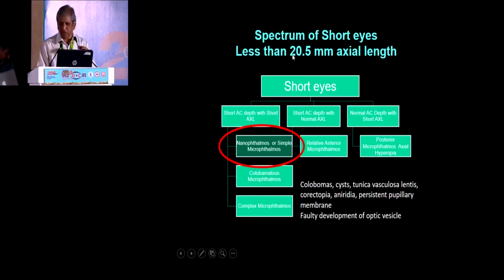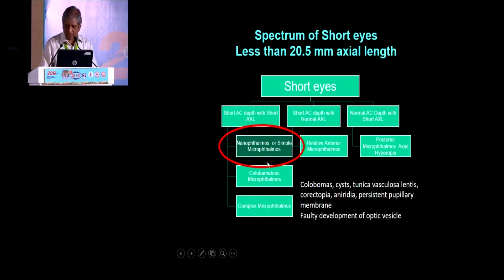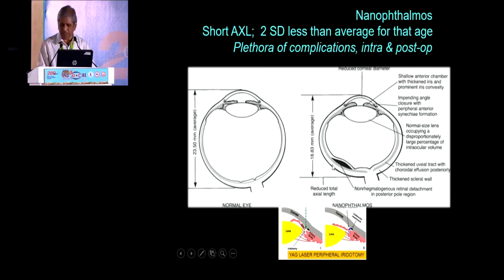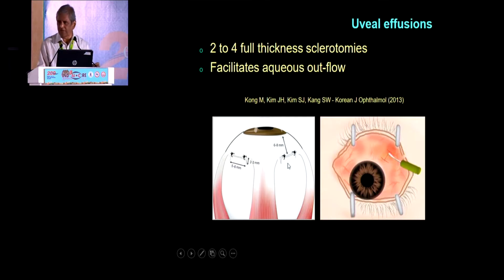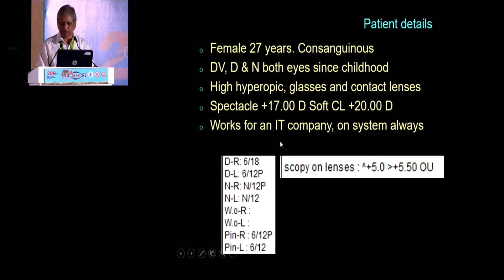Short eyes — less than 20.5 mm — can have a normal anterior segment, a normal posterior segment, or both can be abnormal. Nanophthalmos or simple microphthalmos: the entire eye is abnormal and shorter. They are prone for choroidal detachments. You should be ready with the concept of opening the sclera so that the pressure is let out. They are prone for glaucoma, and 2 to 4 mm full-thickness sclerotomies are sometimes planned earlier. None of my patients have had positive pressure. She is a consanguineous product. Her best corrected vision with pinhole was 6/12 to 6/12 preoperatively, and she was wearing grossly under-corrected lenses.